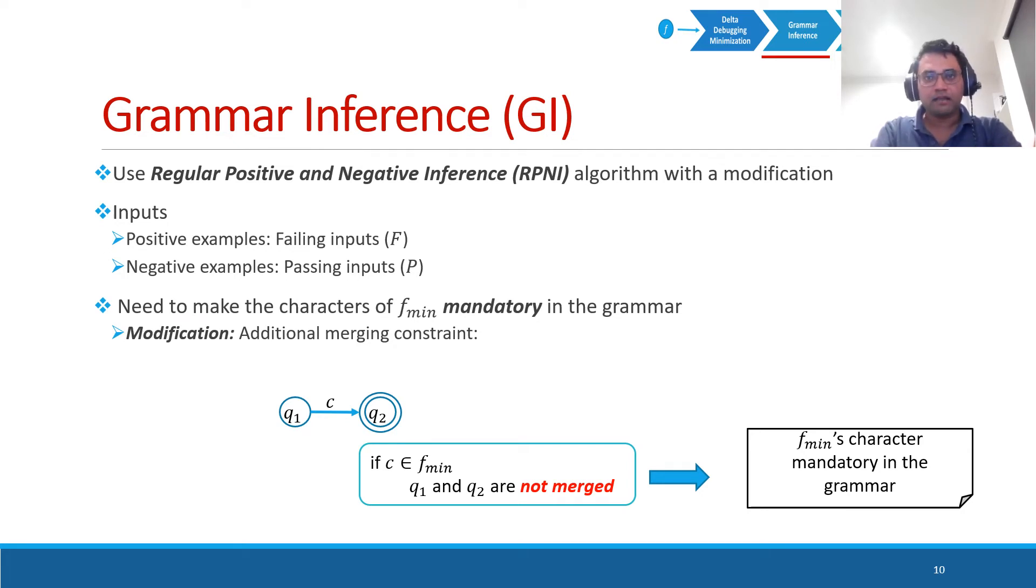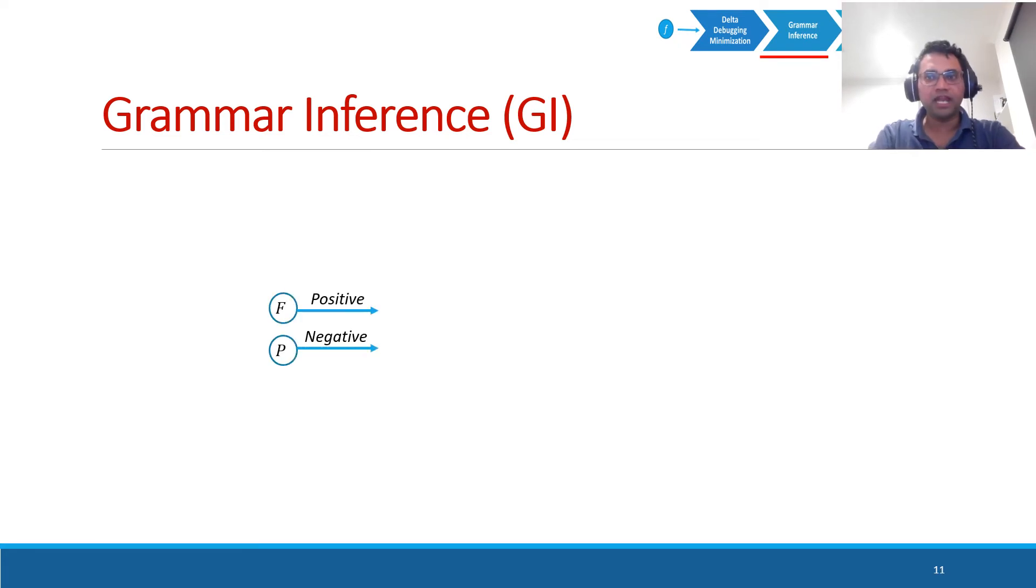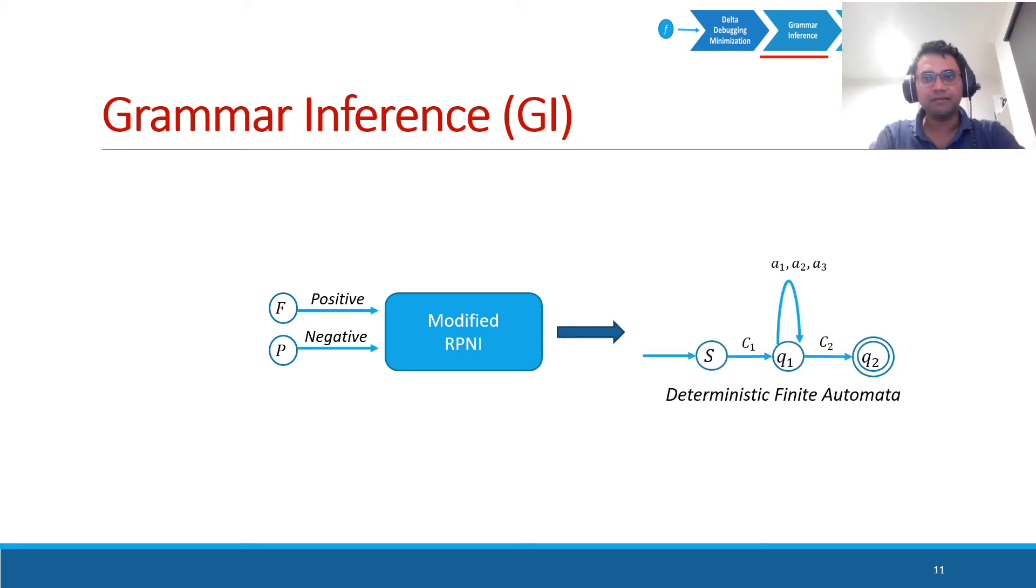And also, by exploring the character class of the minimal failing input, we can generalize this grammar further. Given the failing and passing inputs, with our modified RPNI algorithm, we can have a deterministic finite automaton that accepts all the failing inputs and rejects all the passing inputs.